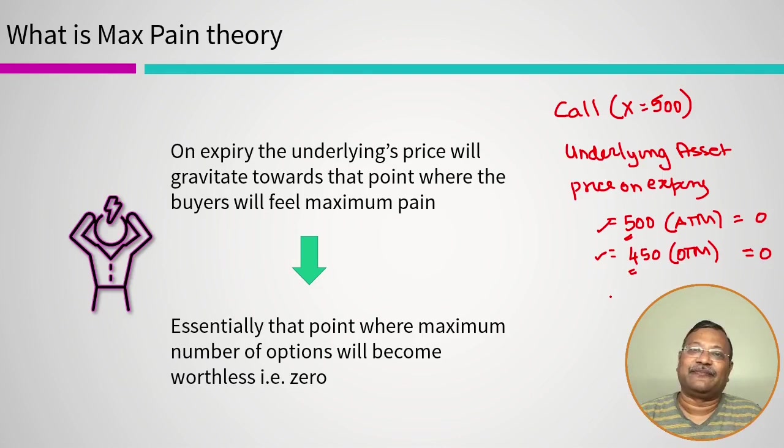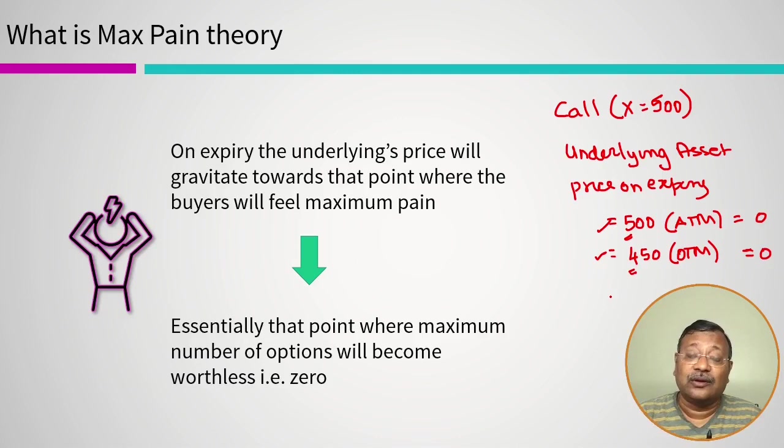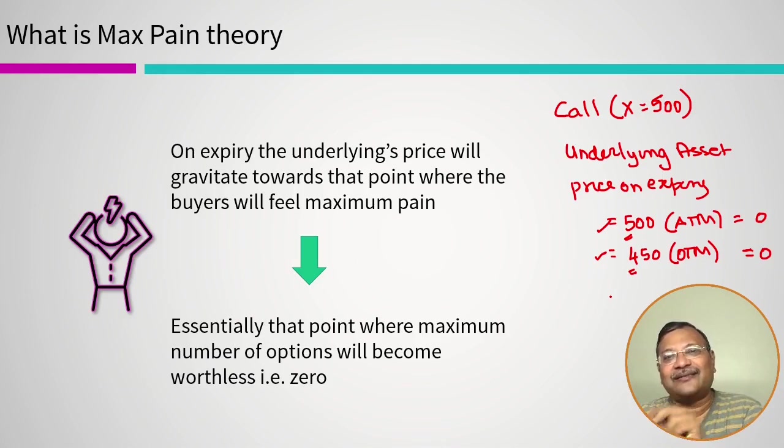At this point the buyer's pain is maximum. This is controversial because in a perfect market it is not easy for anyone to drive stock prices in one direction — that's a debatable issue for another discussion. But for now we'll presume they are able to do so.